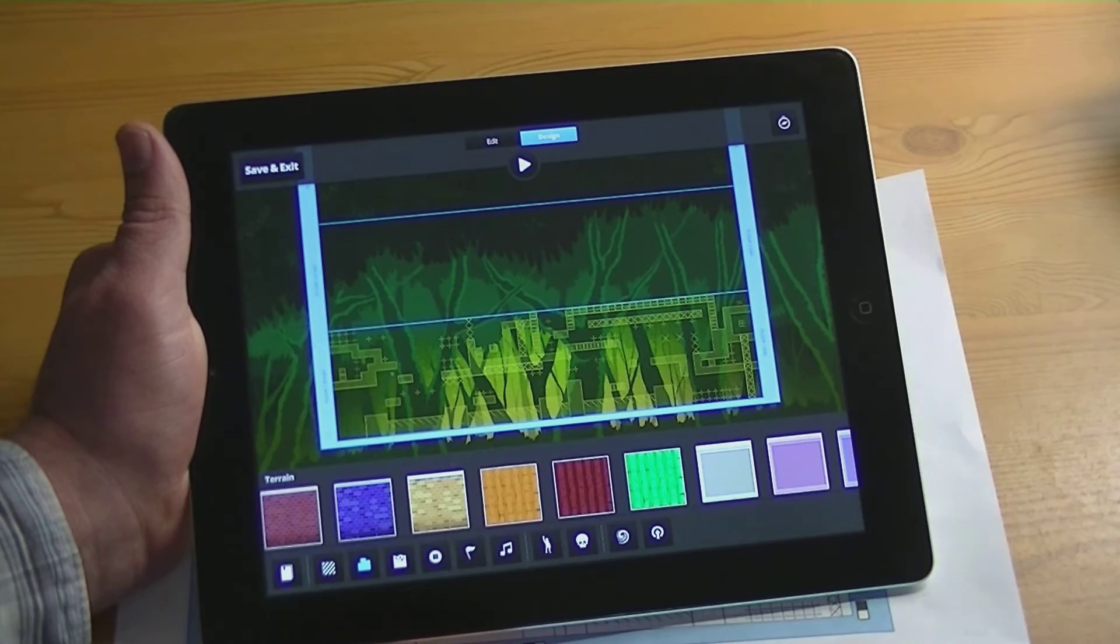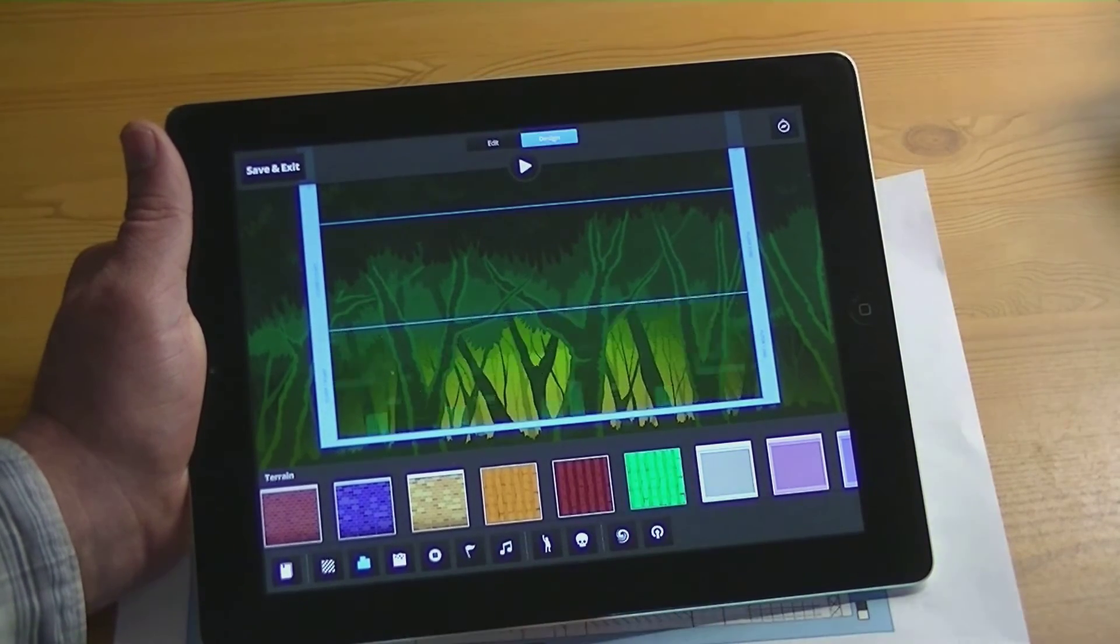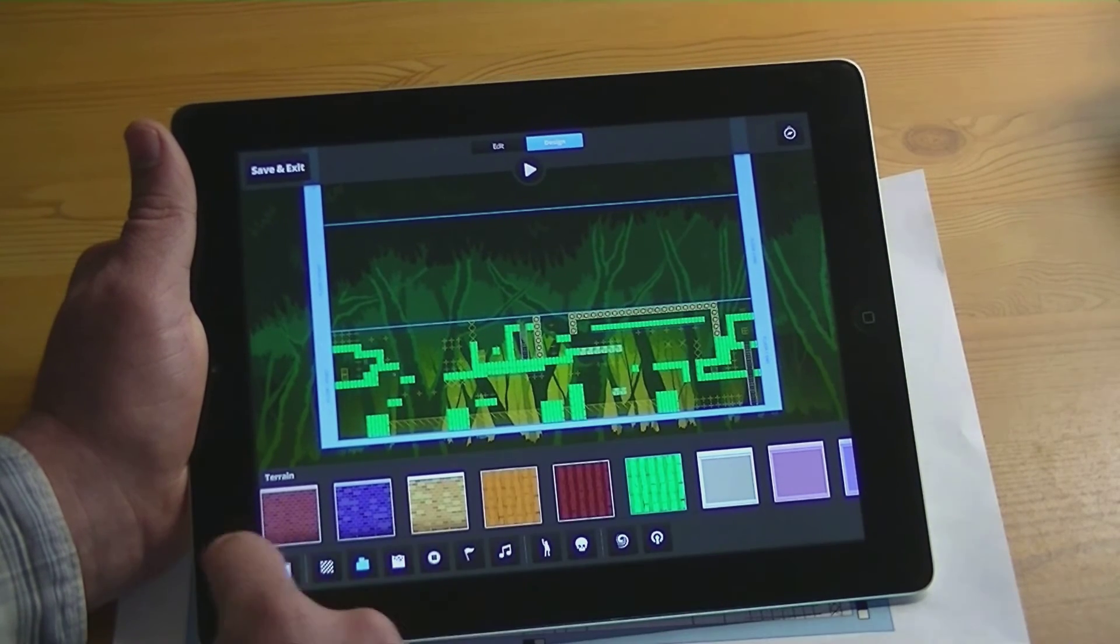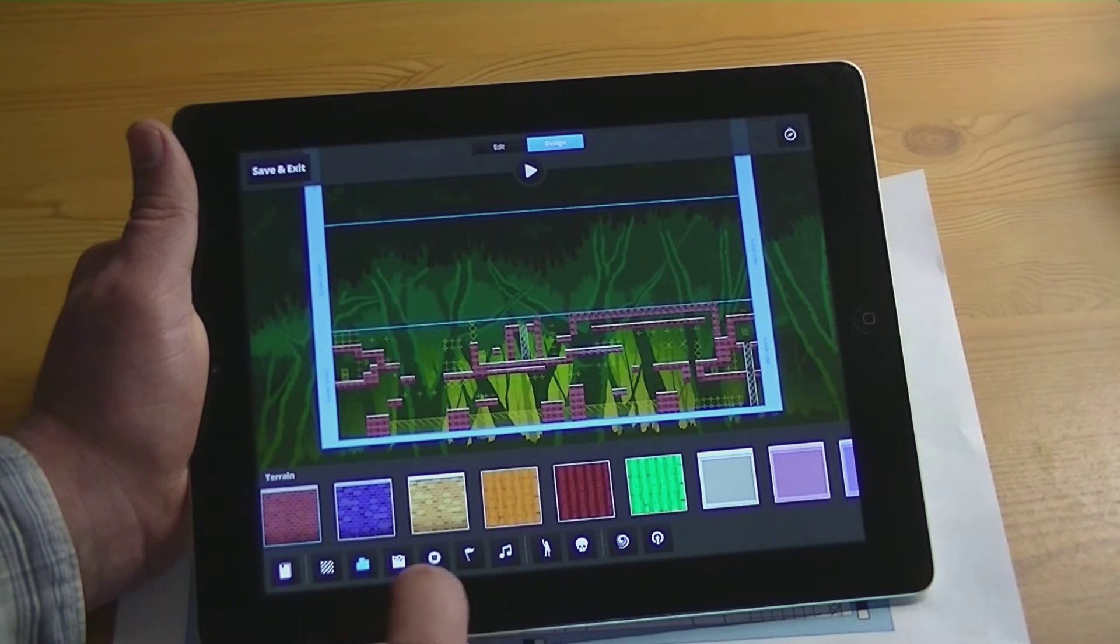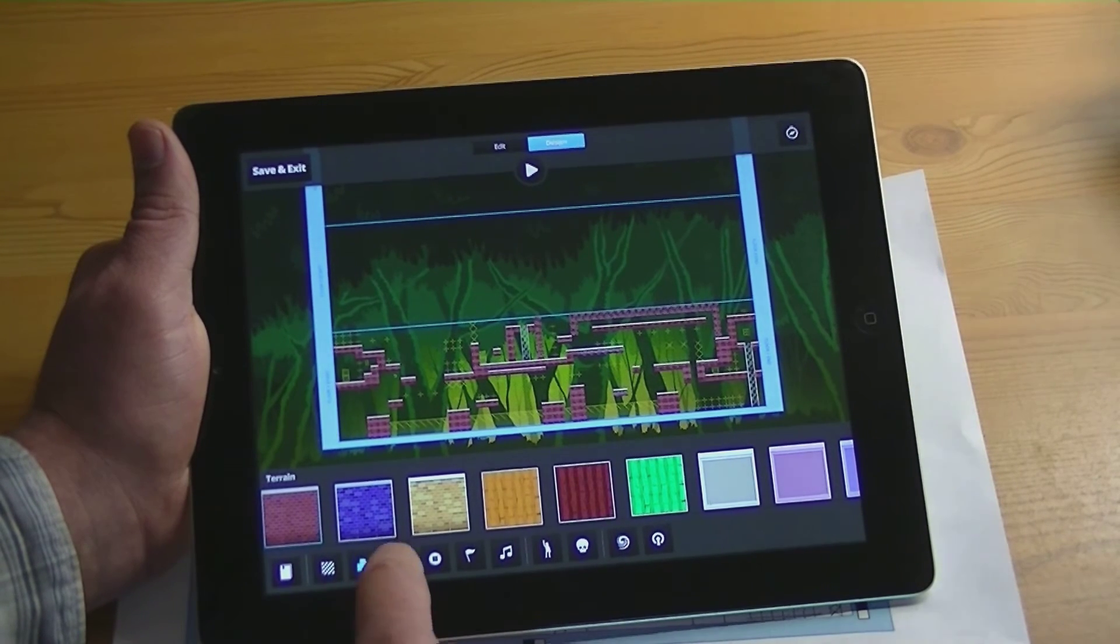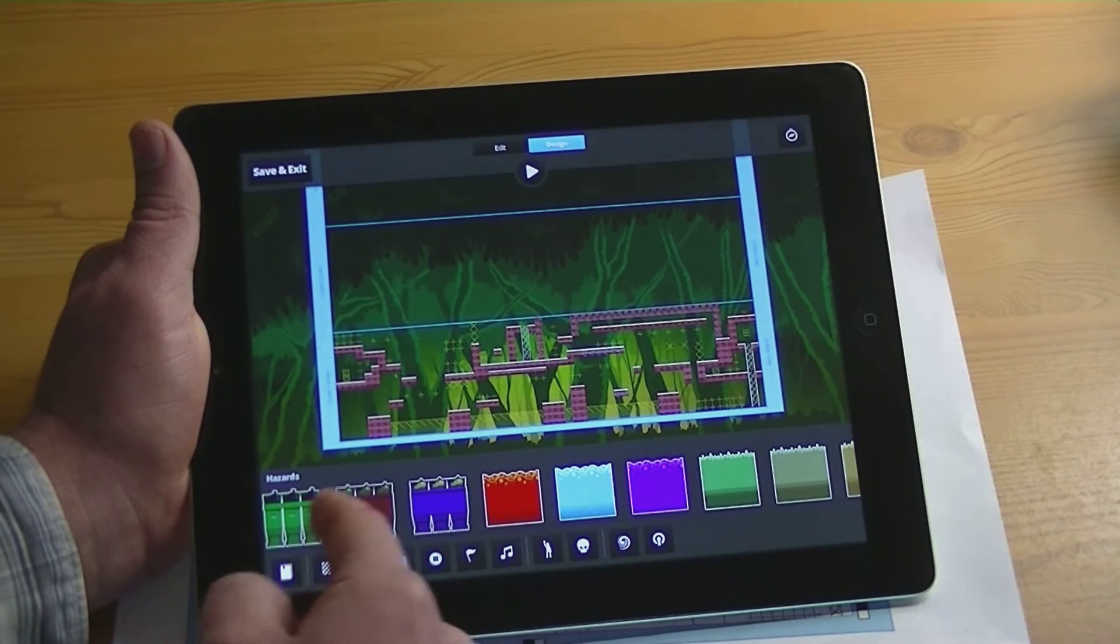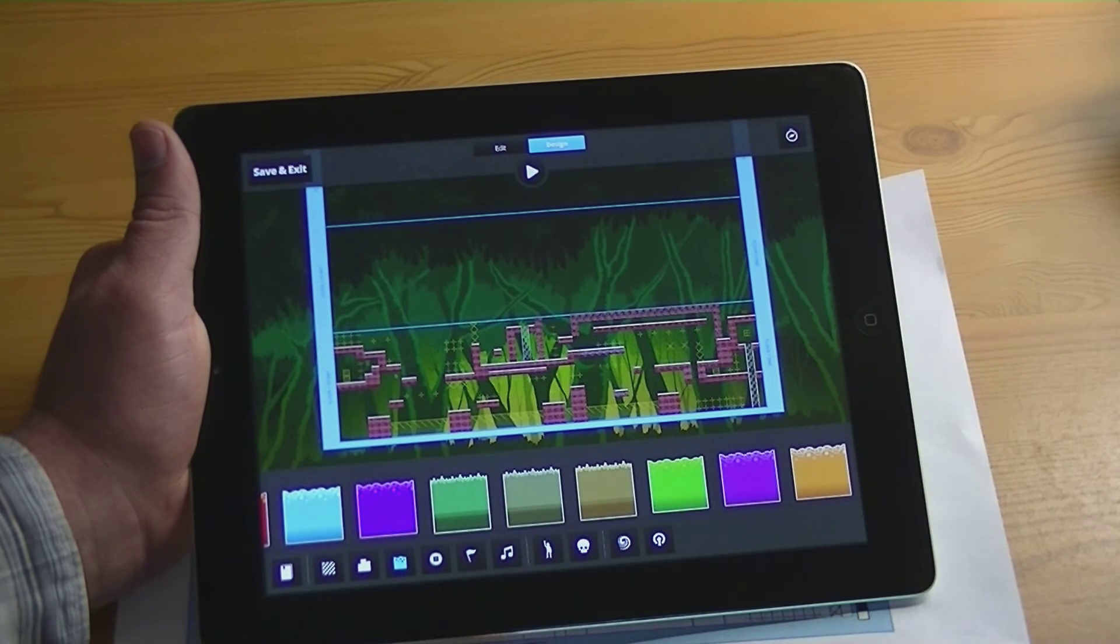Then the next one is what your platforms are going to look like. So because we're in forest, actually you know what, I'm going to do a contrasting here, I'm going to do a red brick. So next one you have is your pits, so your hazards. You have spiked hazards or you have lava pits and slime pits, things like that. So I'm going to go ahead and do an orange pit there.